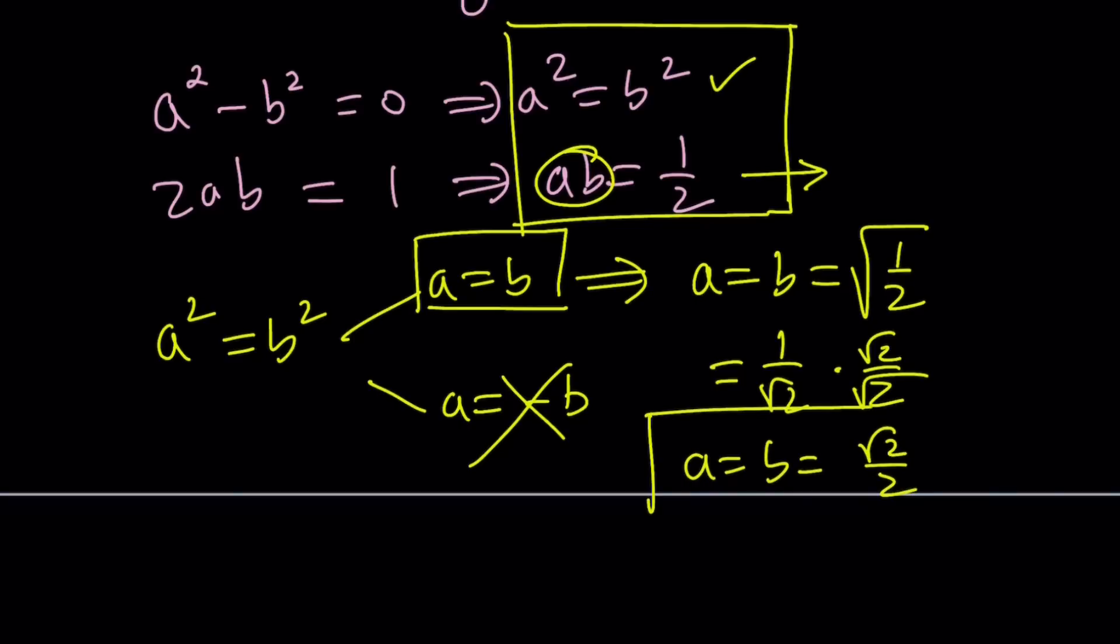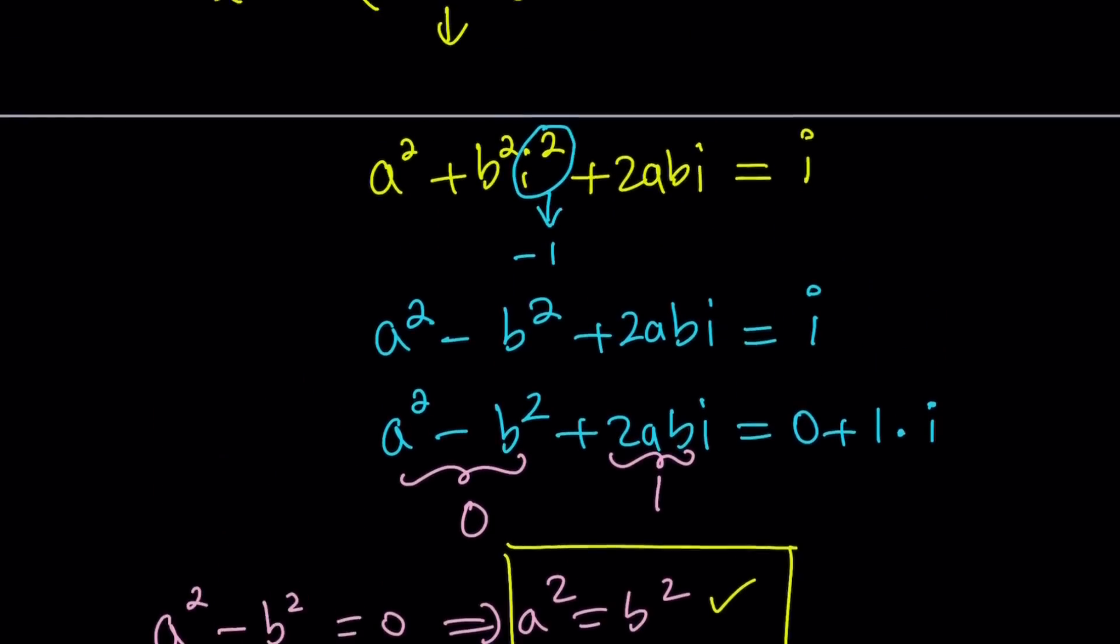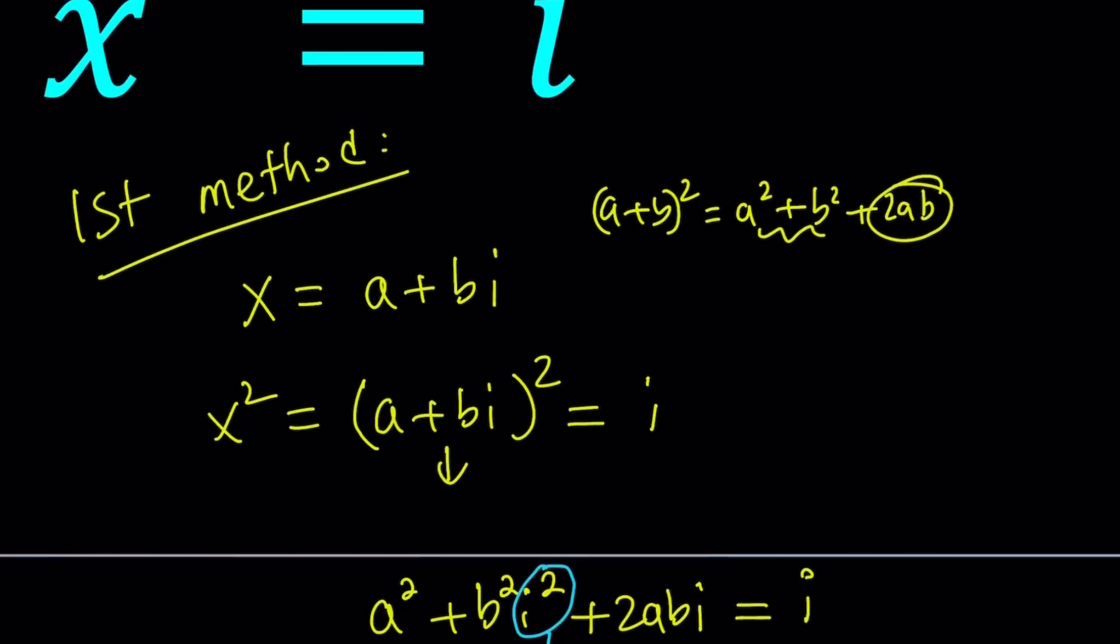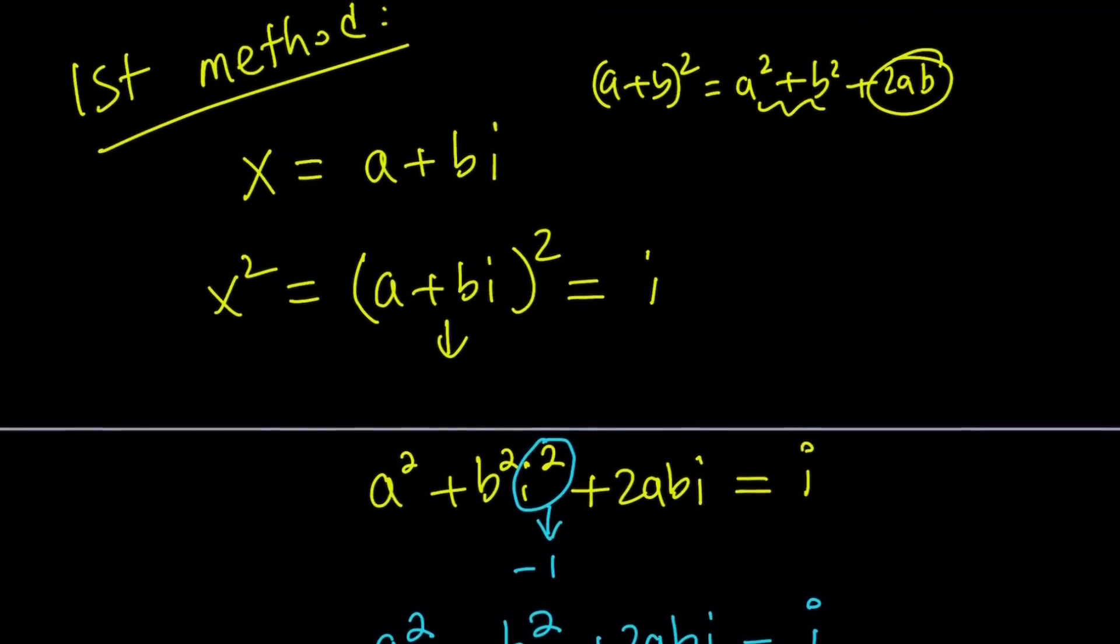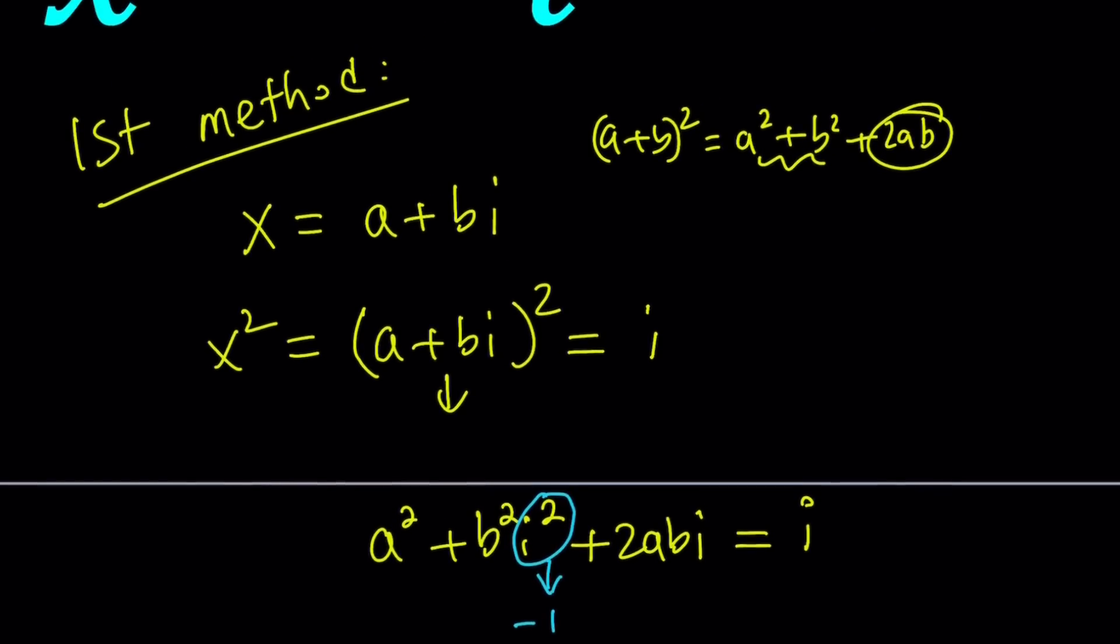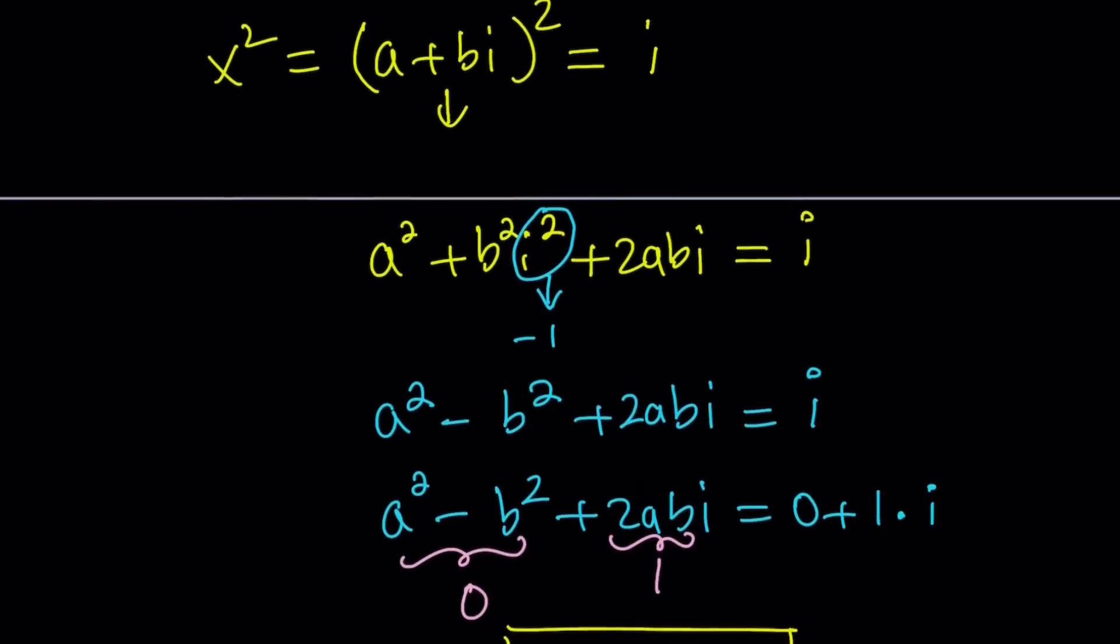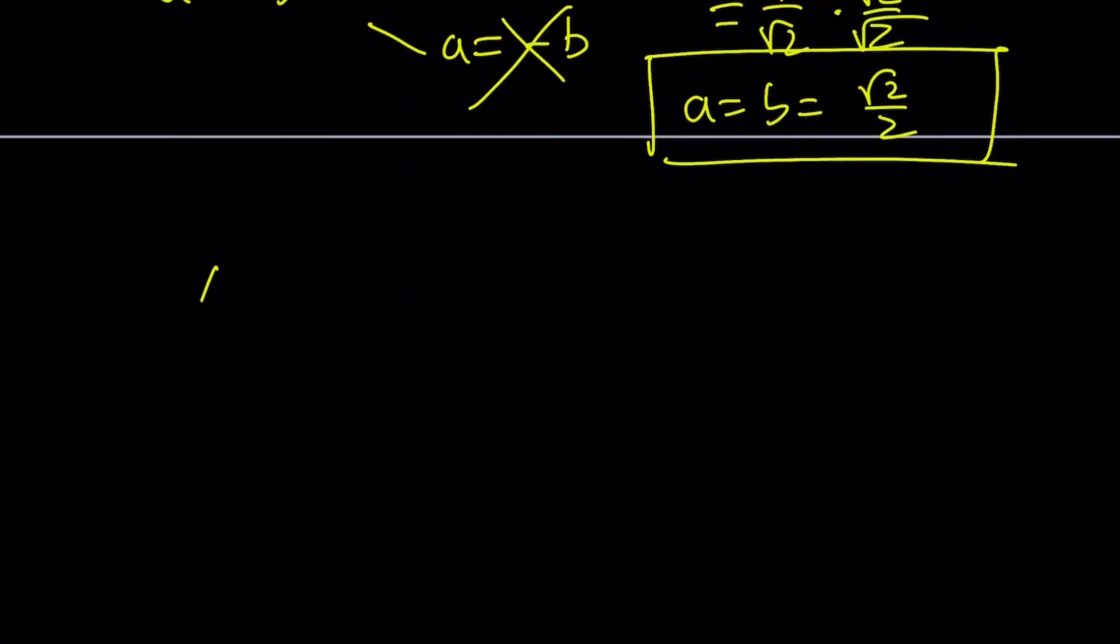Now, this is great because we got the values of a and b. And remember, I just wrote x as a plus bi. So now x is what satisfies this equation. So I'm looking basically for the square roots of i. So from here, x becomes root 2 over 2 plus root 2 over 2i.